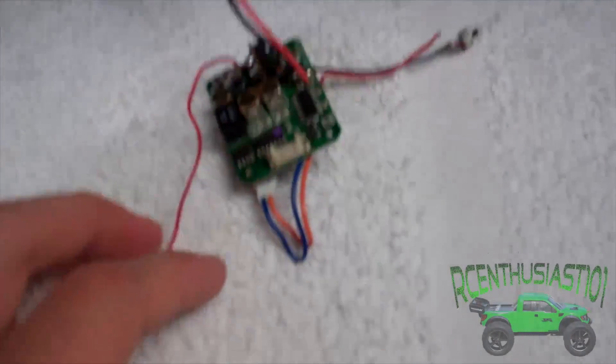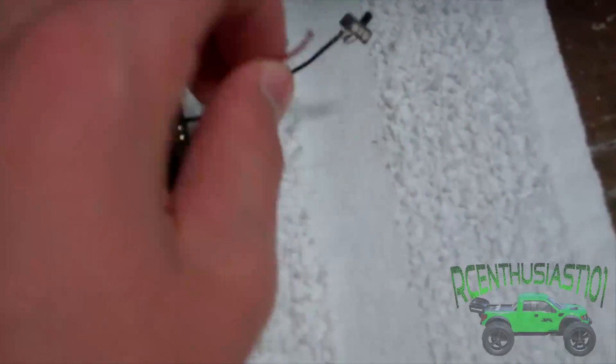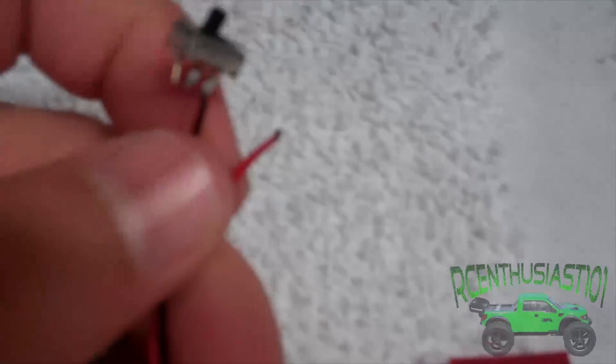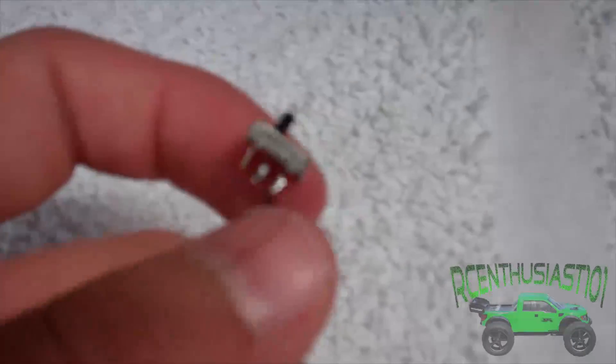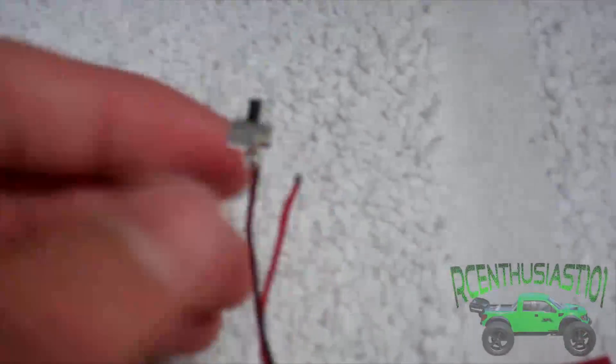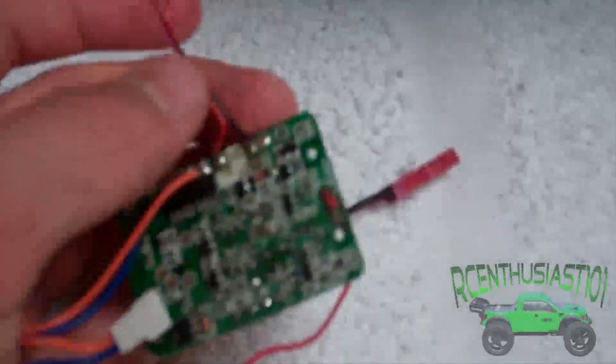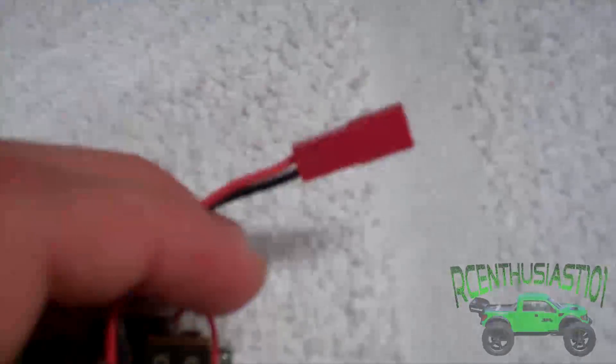So recently the positive wire to the switch on my micro rally ESC broke off and what I decided to do is just skip the whole switch altogether. In this video I'm going to be showing you guys how to set up your ESC so that whenever you plug in your battery you'll be completely ready to go.